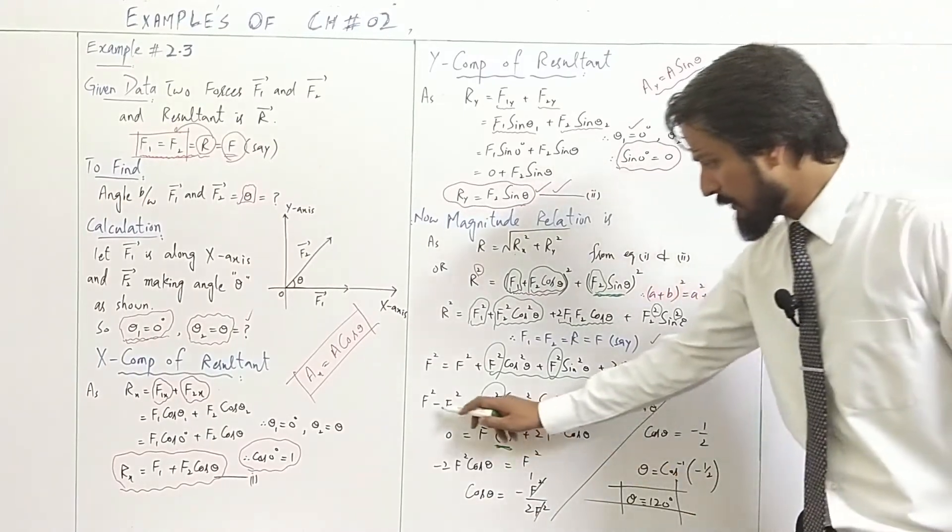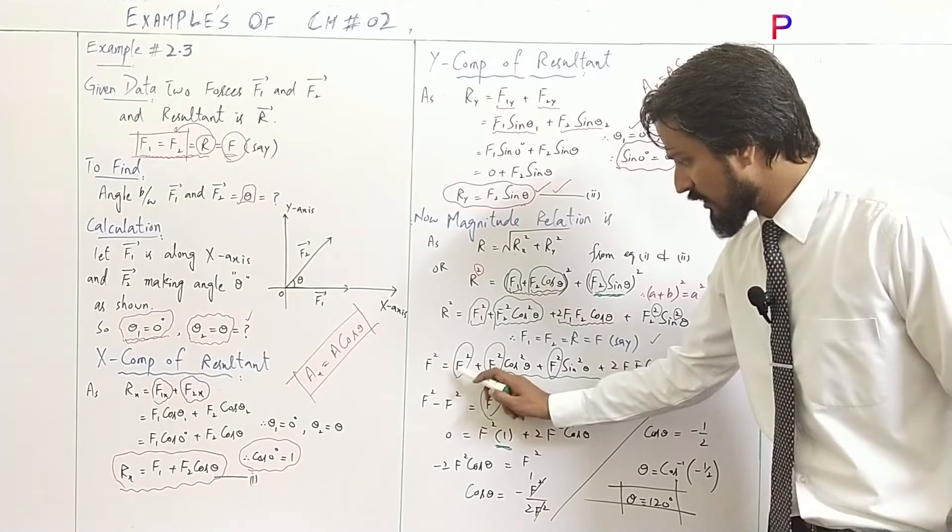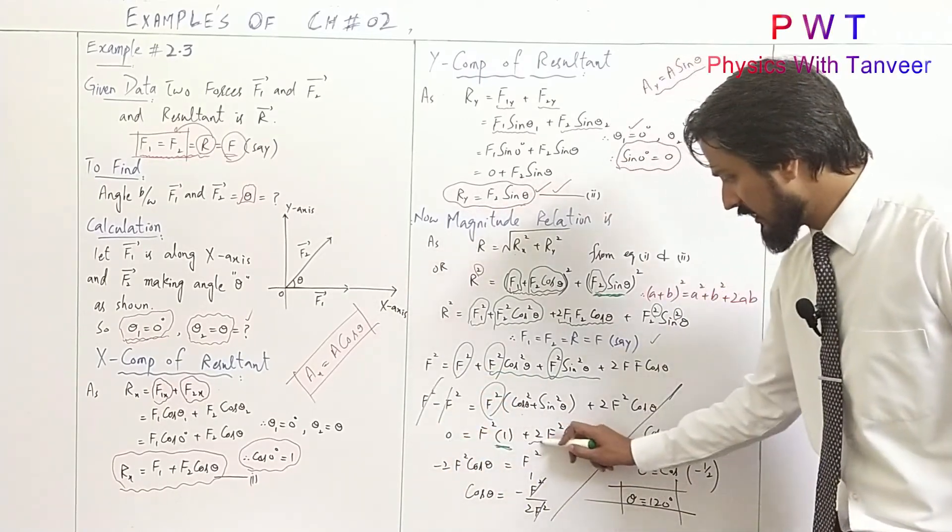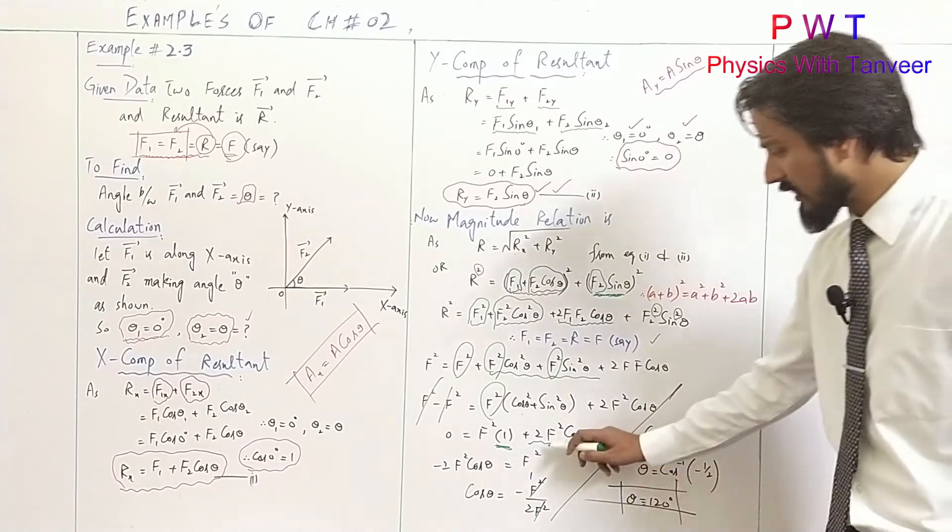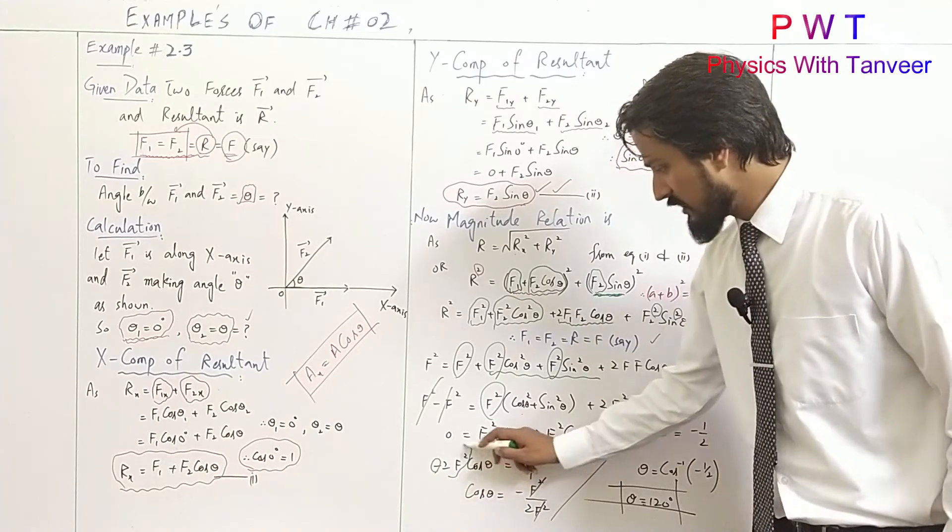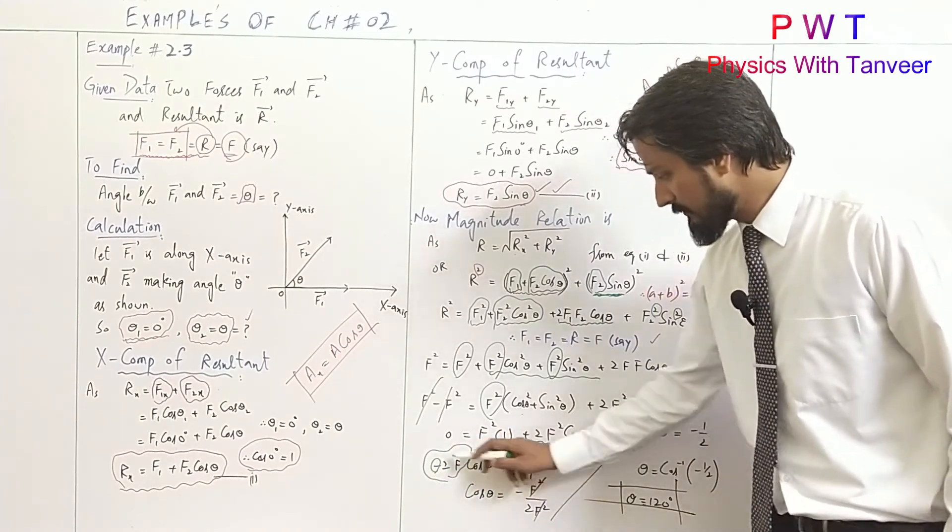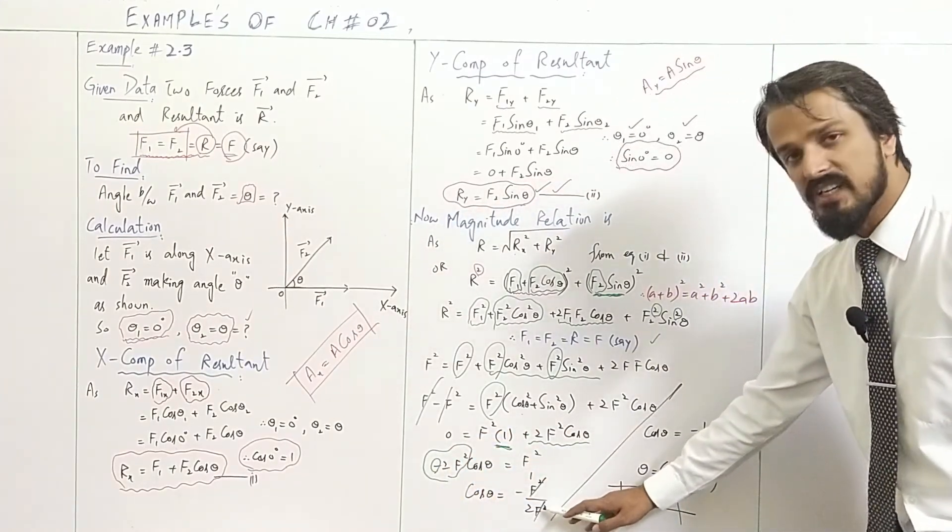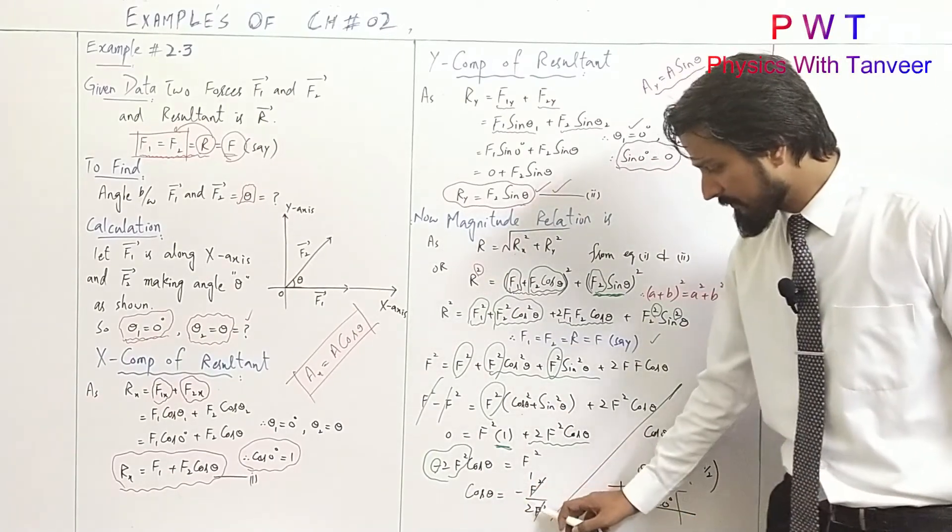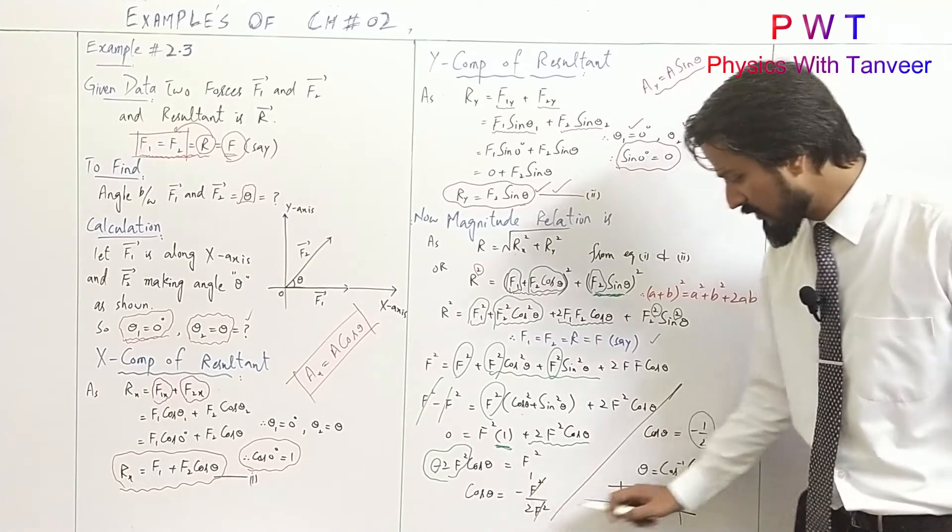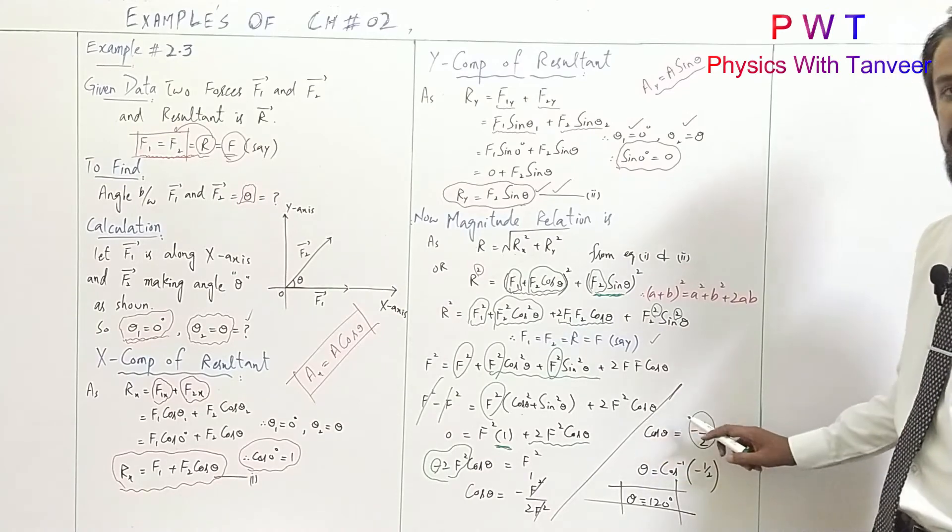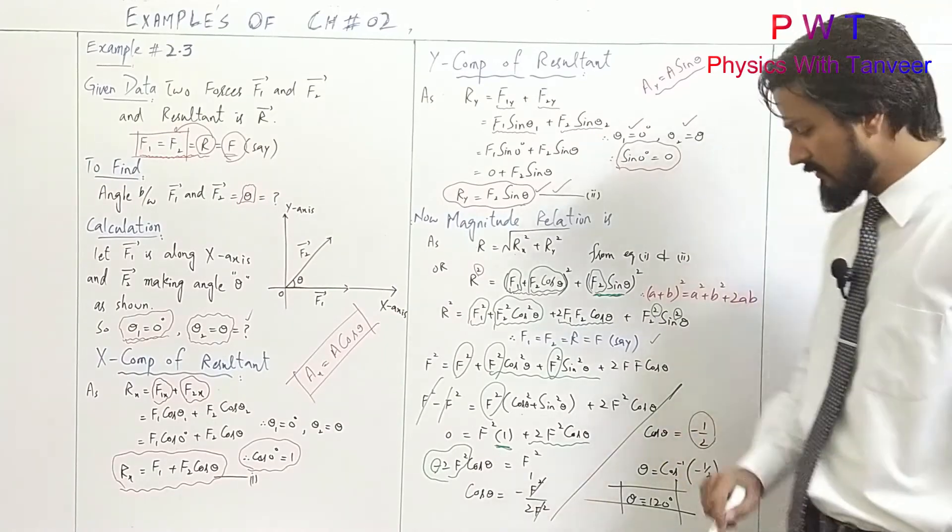Moving terms to the other side gives us minus sign. F squared cancels with F squared. Dividing both sides, we get cos theta equals minus 1/2. To find theta, we take inverse cosine. When cosine goes to inverse, the result we get is theta equals 120 degrees.